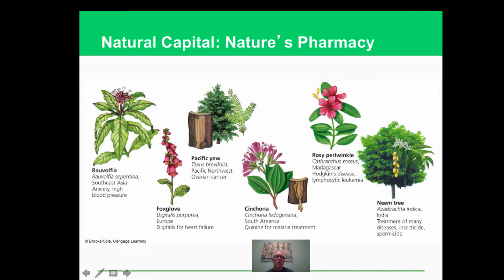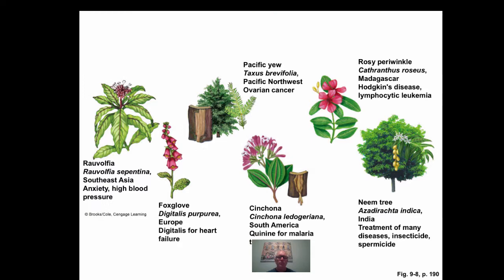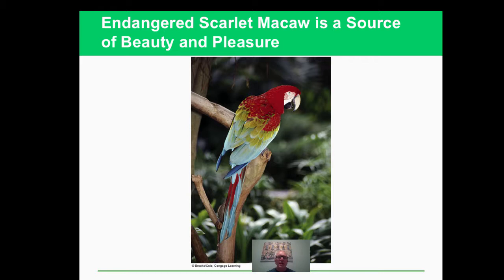We can benefit directly from these species. Many pharmaceutical products we have right now come from things we found in the natural world, and then we've been able to replicate them in a lab. These plants could help us out, and if we get rid of the areas they live in before we find out what they're good for, perhaps we're losing something beneficial. Some people would argue that certain birds are beautiful and have a right to exist, but that's tough if we're taking their habitats away.